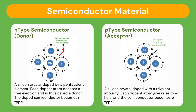N-type materials are silicon crystals that are doped by pentavalent elements. Pentavalent elements are elements that have five electrons in their outer valence shell. Each atom of the pentavalent element becomes a dopant atom and donates a free electron, and is thus called a donor. The doped semiconductor that is doped by the pentavalent element becomes an N-type material.